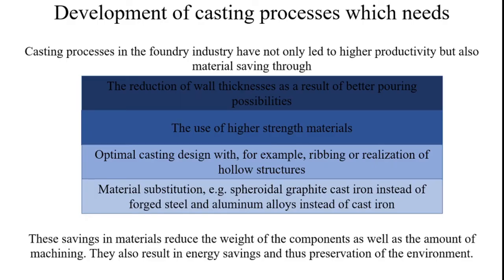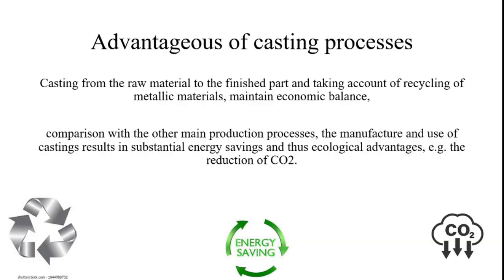Development of casting processes in the foundry industry has not only led to higher productivity but also material saving. Material can be saved through reduction of wall thicknesses as a result of better pouring possibilities, the use of higher strength materials, optimal casting design with ribbing or hollow structures, and material substitution — for example, spheroidal graphite cast iron instead of forged steel, and aluminium alloys instead of cast iron. These savings reduce component weight and the amount of machining required, and result in energy savings and preservation of the environment.